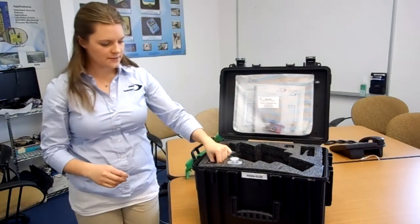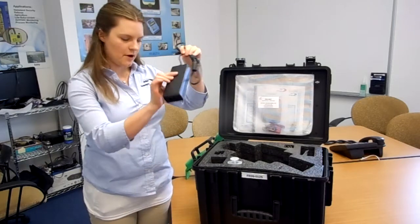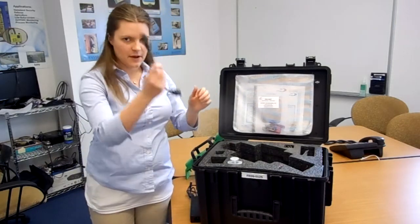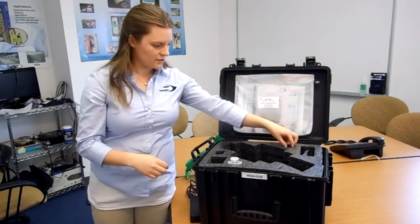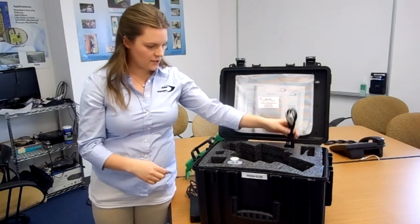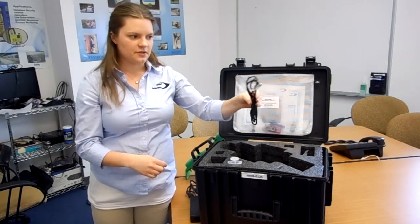Then we have the power supply that's up in this front pocket. There's the power supply. And then there's the cable that goes with the power supply in the pocket just behind it. Then we have the serial data cable to connect the computer to the instrument. And that's here.